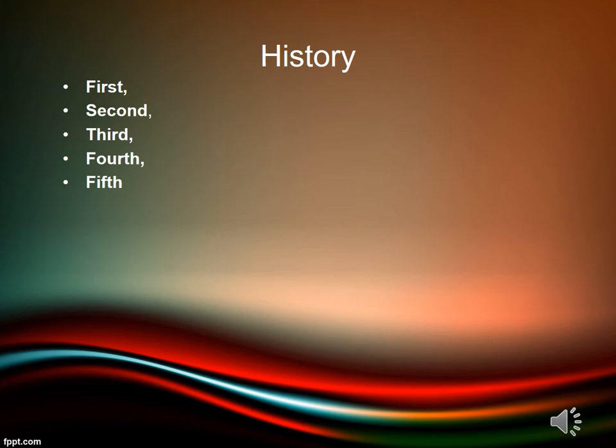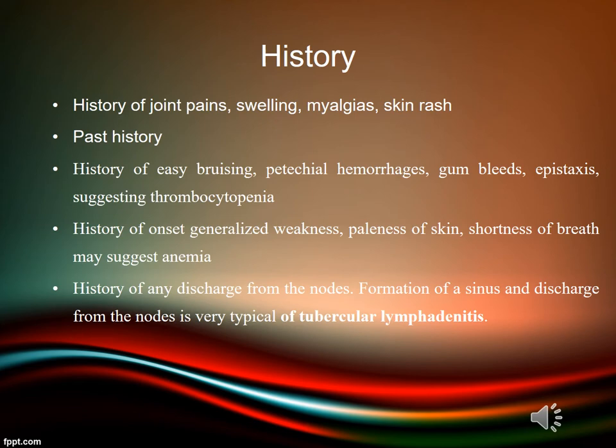Fifth, nodes lasting less than two weeks or greater than one year with no progression of size have a low likelihood of being neoplastic, but we must exclude low-grade lymphoma. History of joint pains, swellings, myalgias, or skin rash may suggest rheumatological or connective tissue disease.